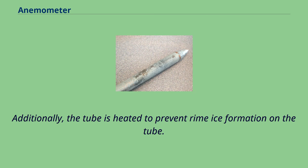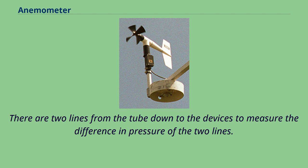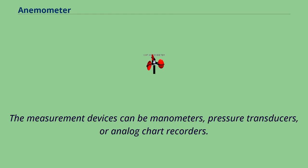Additionally, the tube is heated to prevent rime ice formation on the tube. There are two lines from the tube down to the devices to measure the difference in pressure of the two lines. The measurement devices can be manometers, pressure transducers, or analog chart recorders.